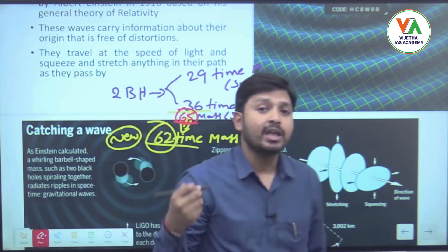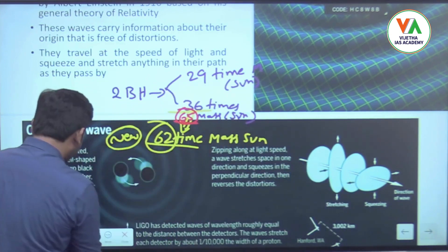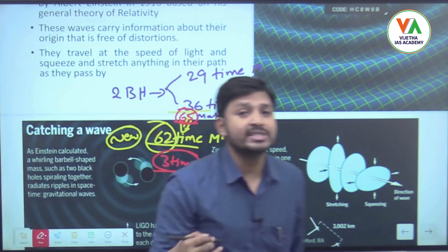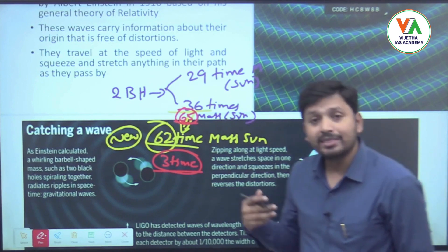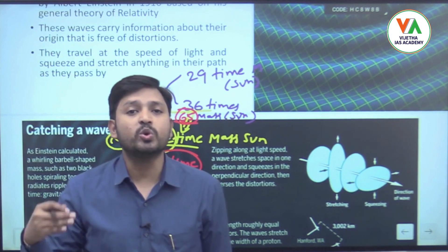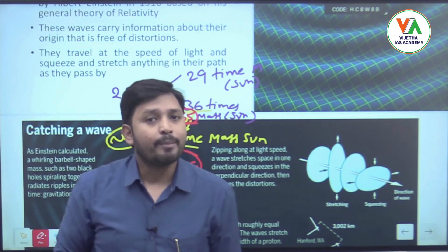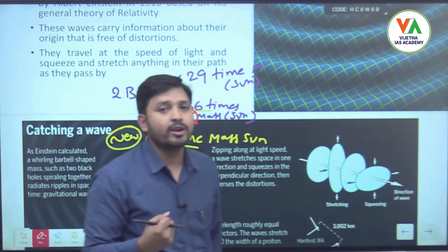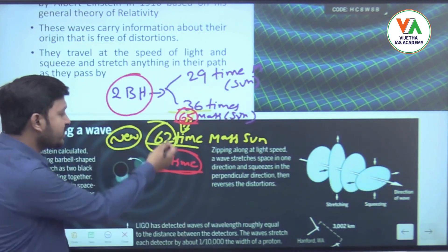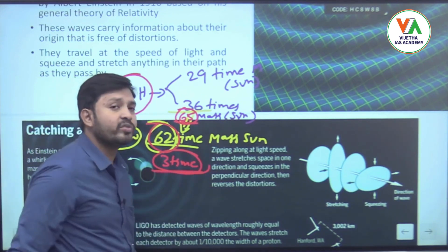But if you add the original masses — 29 plus 36 — that gives 65 times the mass of the Sun, while the new black hole had only 62 times. So three times the mass of the Sun was released as energy in the form of vibrations — those vibrations are gravitational waves — which traveled and were detected by instruments on Earth's surface.